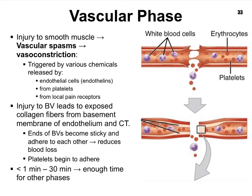Let's create a scenario of you cutting your finger with a knife as you were cutting veggies in the kitchen. That wound created injury to the smooth muscle that we find in our blood vessel walls. This is literally going to cause those muscle cells to contract, creating vasoconstriction — the constricting of our blood vessels. The damage to our blood vessel wall triggers the release of all kinds of chemicals by various cells, even including the platelets themselves, causing vasoconstriction, which narrows the vessels and makes it harder for blood to escape.